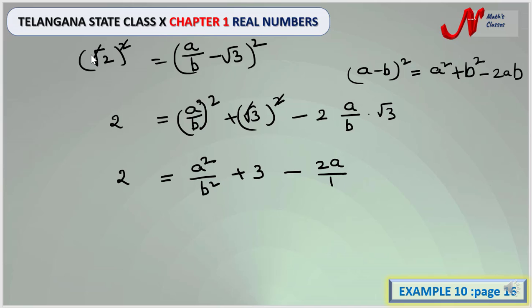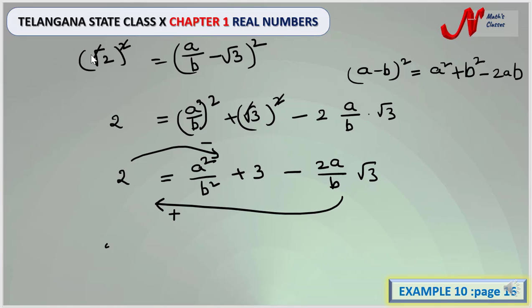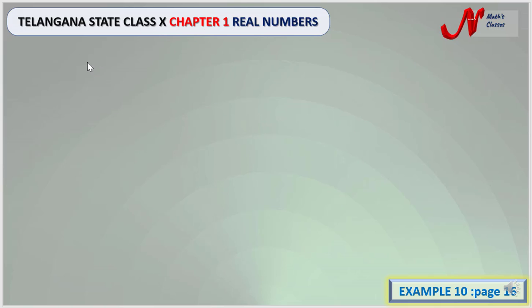Now we simplify by transposing 2 to the RHS and the √3 term to the LHS. The 2 becomes negative on the RHS, and the negative √3 term becomes positive on the LHS. So we can write (2a/b)√3 = a²/b² + 3 − 2. After simplifying, (2a/b)√3 = a²/b² + 1.